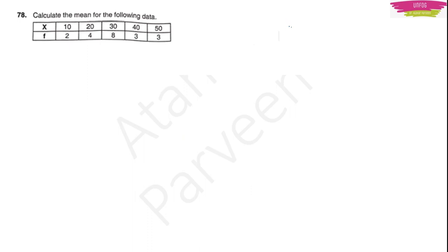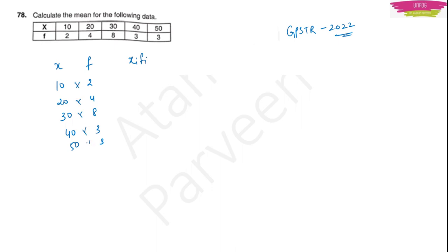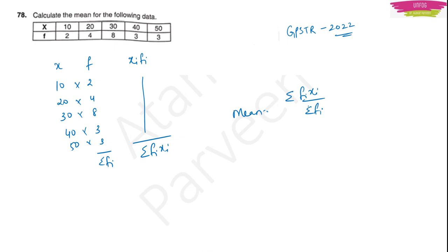This is another example from GPSTR 2022. You have to find mean. You have X values: 10, 20, 30, 40, 50 and F values: 2, 4, 8, 3, 3. Multiply to find FiXi, then take summation FiXi and summation Fi, then apply mean equals summation FiXi upon summation Fi. This is your homework — give me the answer in the comment section. I will give the link to the solved GPSTR 2022 question paper in the description.